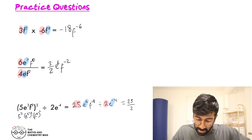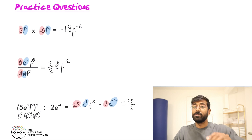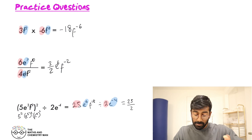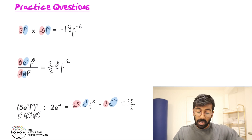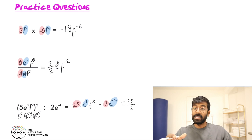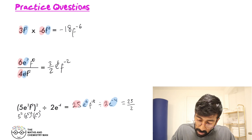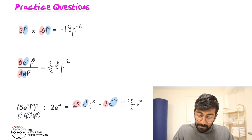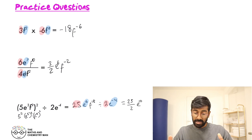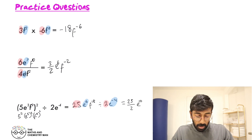Next, let's deal with the E's: E to the 6 divided by E to the minus 4. Be careful with your signs — that's 6 minus minus 4, which is 6 plus 4 — so it's E to the power of 10.